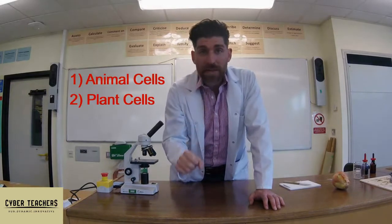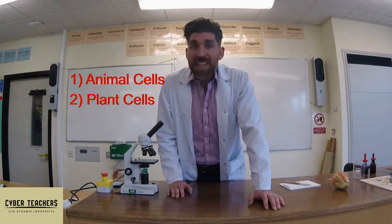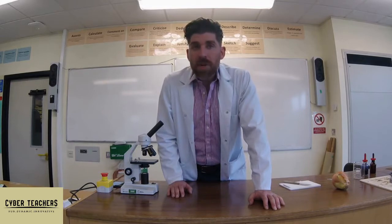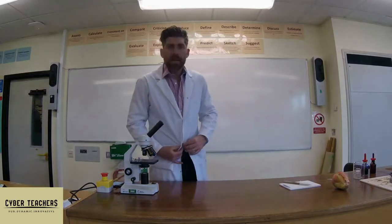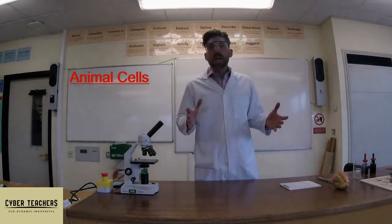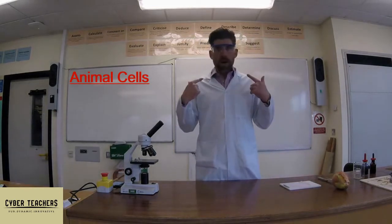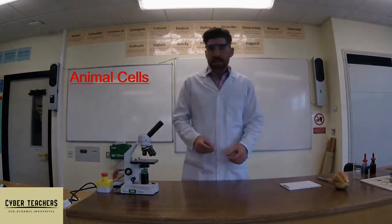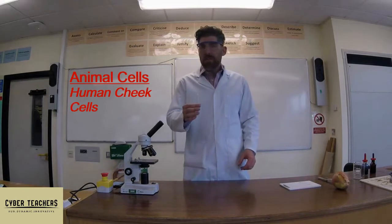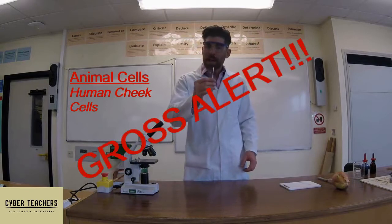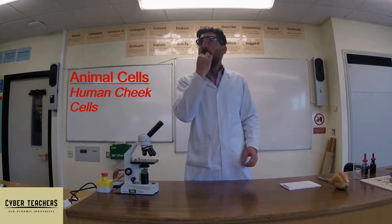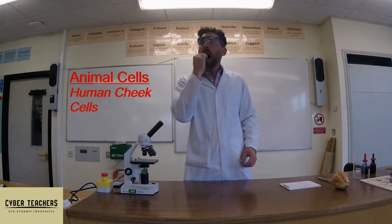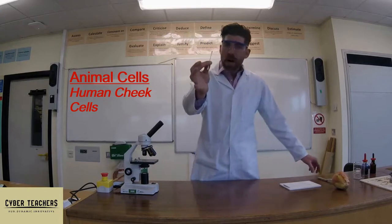For this required practical you need to look at two types of cells: animal cells and plant cells. You need to stain them, so your hands and clothes could get very messy — always wear a lab coat. For animal cells, the nearest and easiest source is cheek cells. So I'm going to get some cheek cells — a little bit of a gross alert — I'm going in deep and giving it a good rub around.